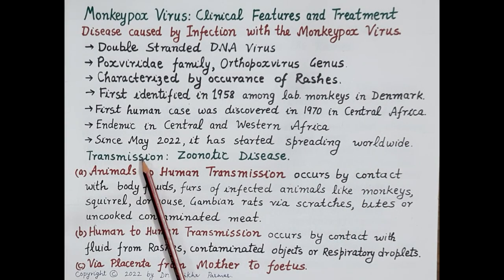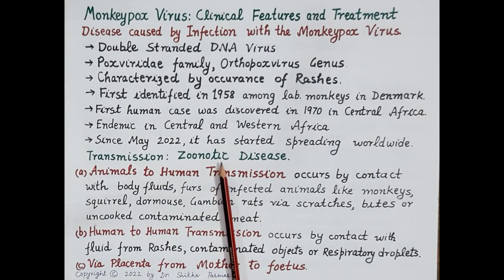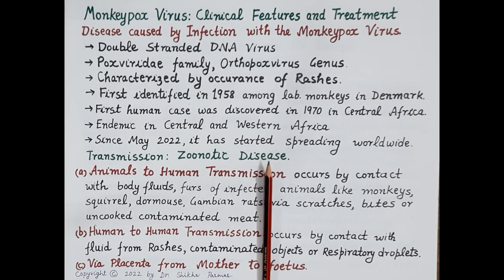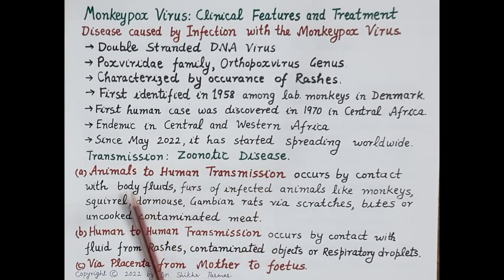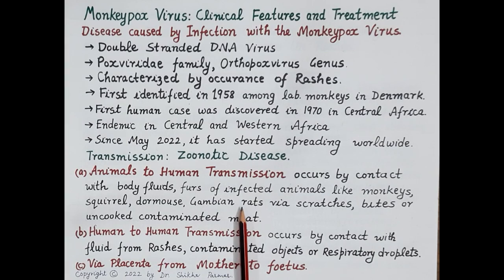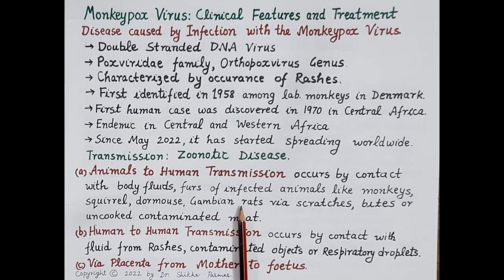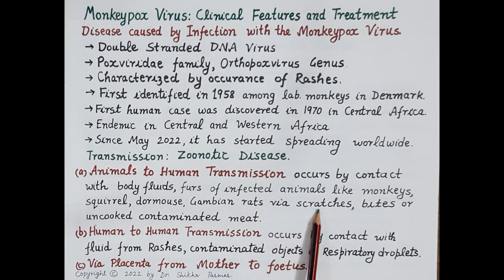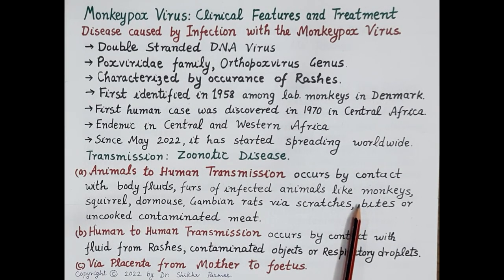Monkeypox is a viral zoonotic disease — that is, a disease where a virus is originally transmitted from animals to humans. Animal-to-human transmission occurs by contact with body fluids of infected animals like monkeys, squirrel, dormouse, and Gambian rats. The virus enters the human body through wounds or cuts formed when an infected animal scratches or bites a human being. Infection also spreads from animals to humans by the consumption of uncooked contaminated meat.